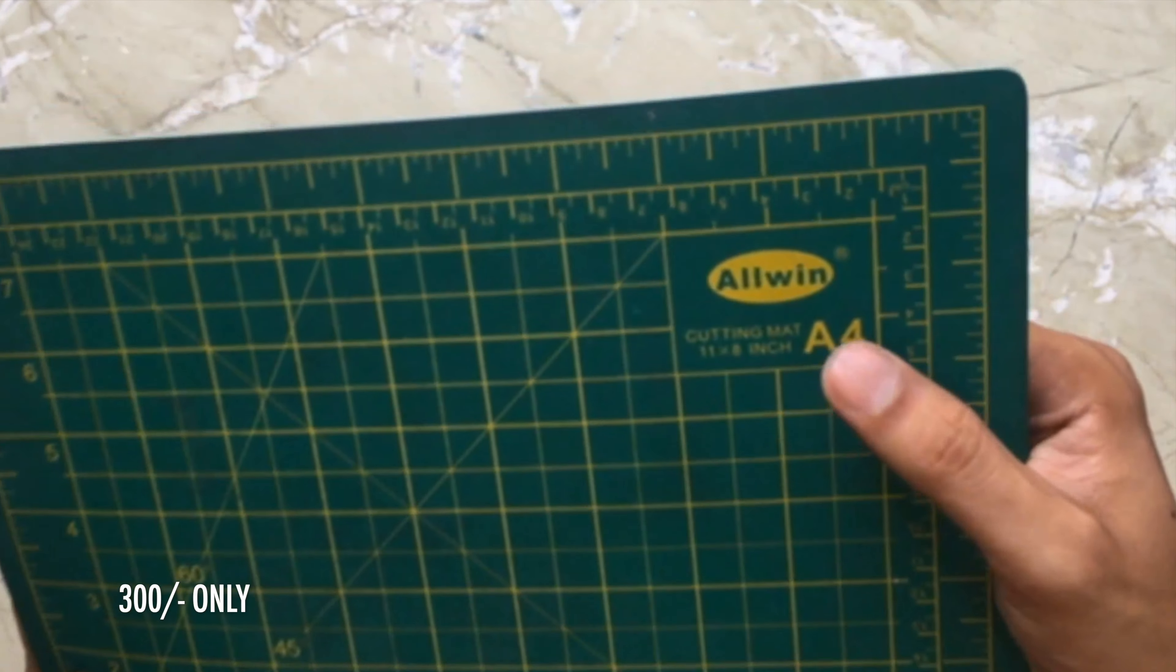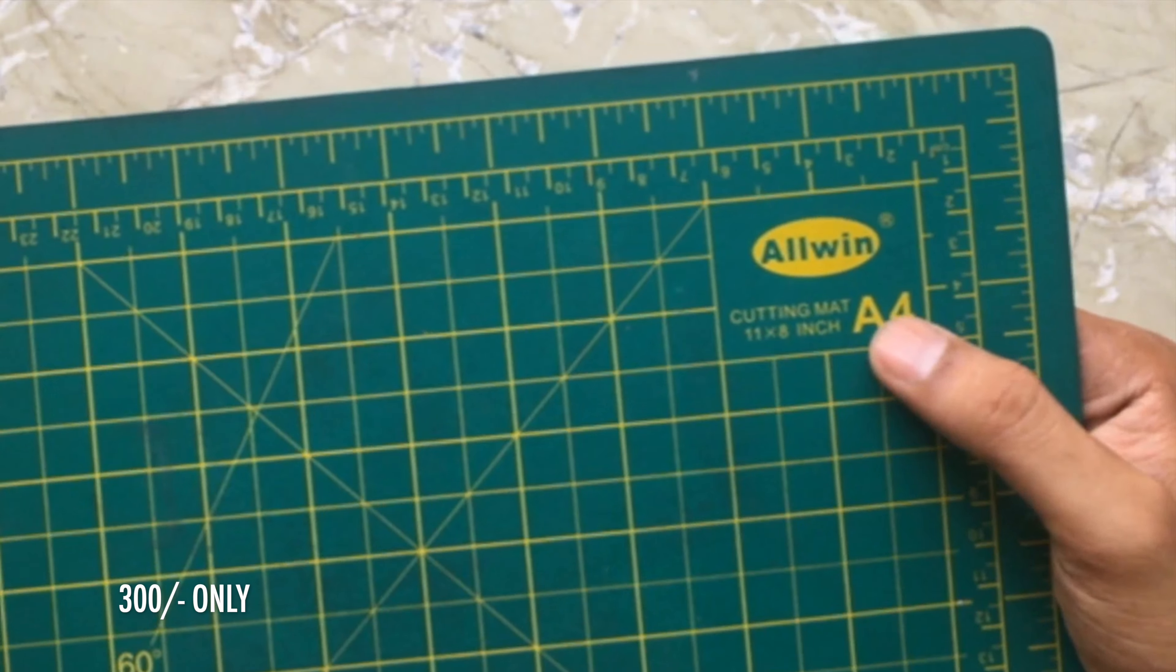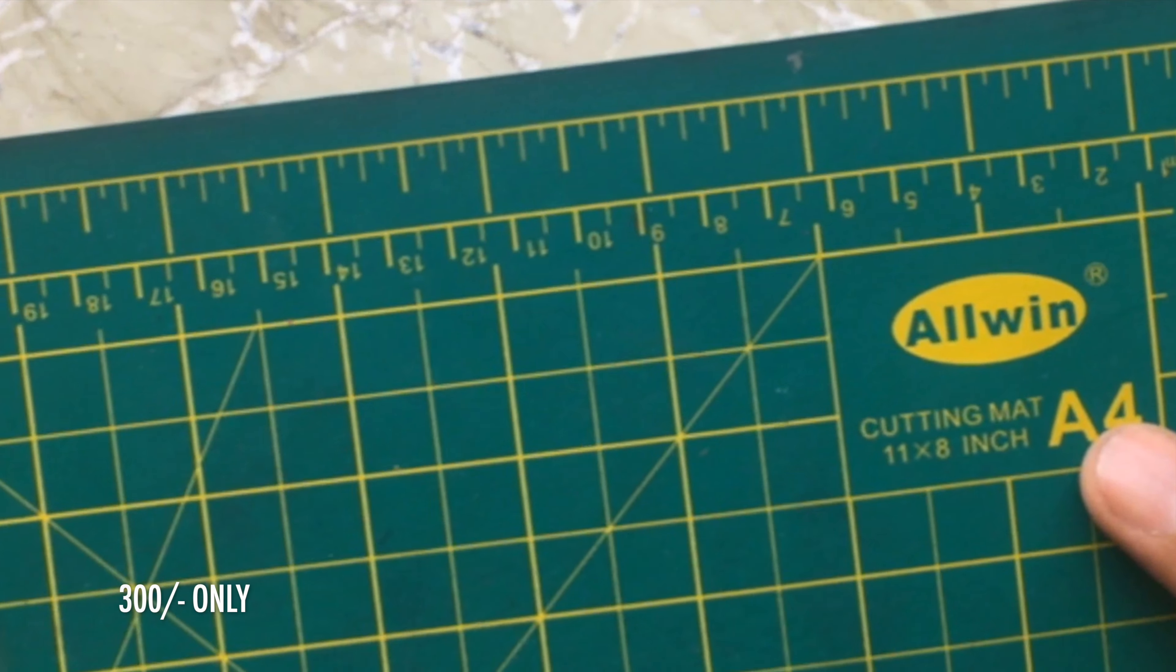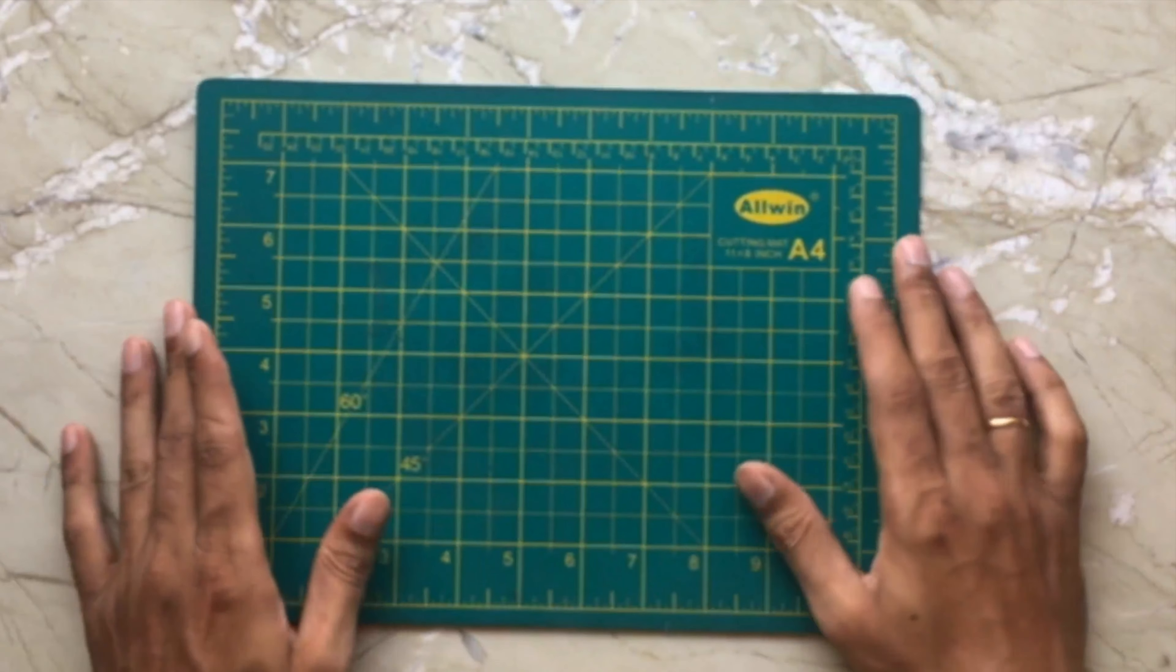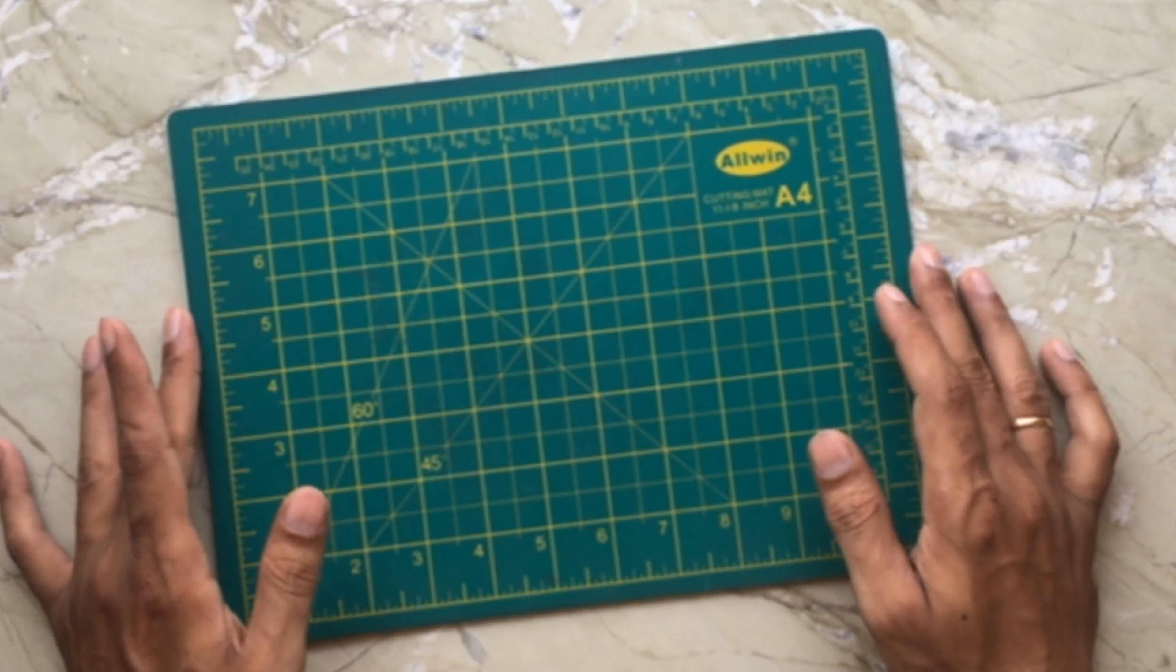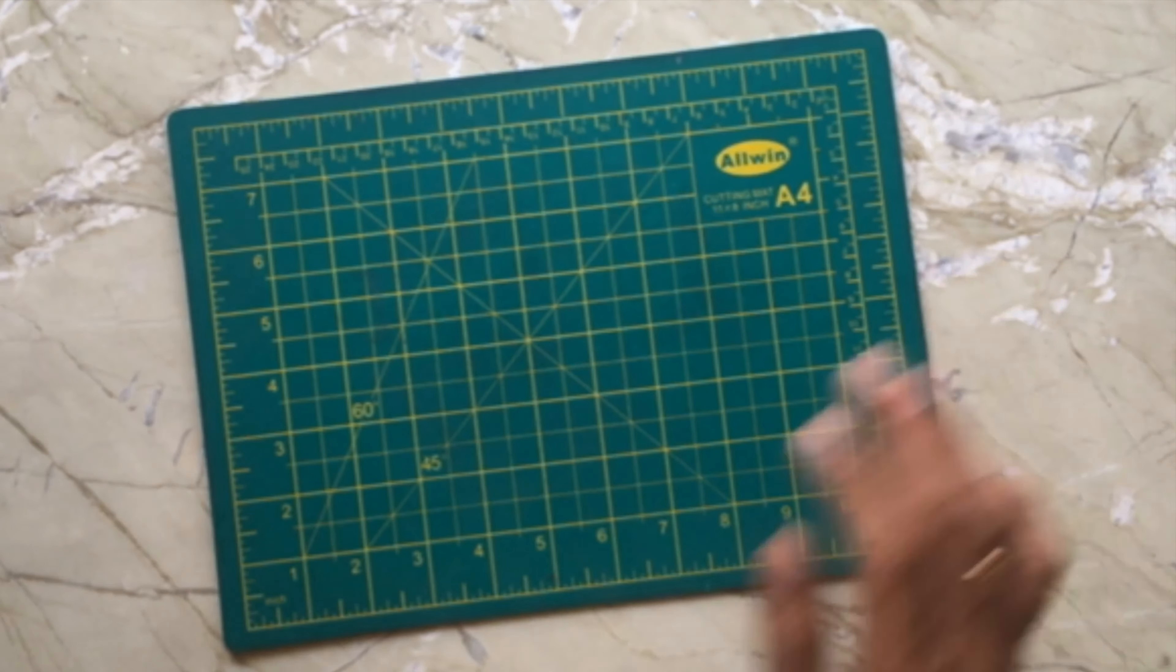The starting price for these mats is Rs. 300 only and the price increases as you increase the size of the mat. You can find these mats in the local craft store or you can also place an order for them online on websites like AliExpress.